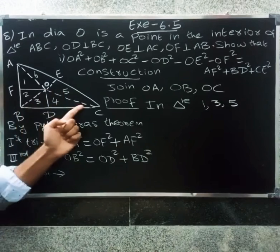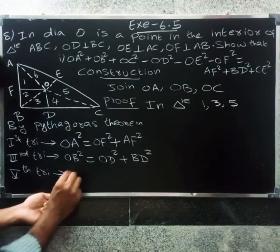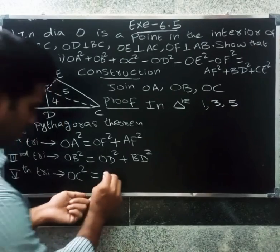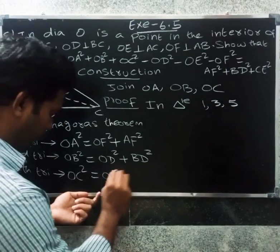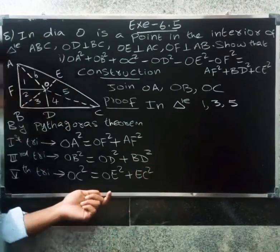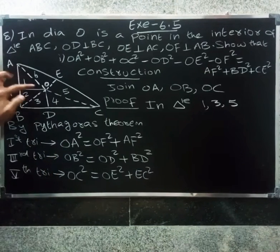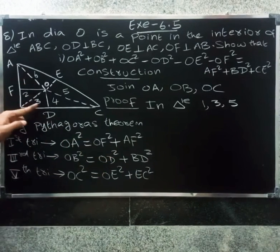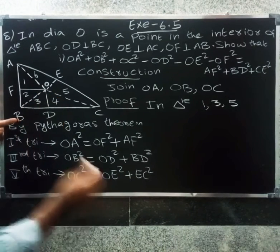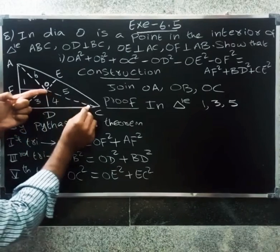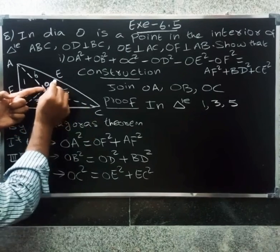Next, the fifth triangle with hypotenuse OC: OC² = OE² + EC². So summarizing: OA² = AF² + OF², OB² = BD² + OD², OC² = OE² + EC².